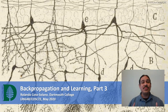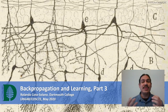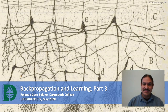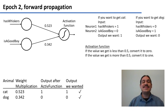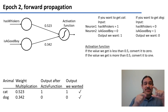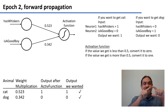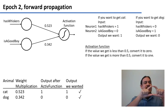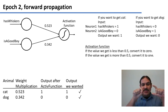Welcome back. Let's continue our brief example of backpropagation and how a neural network can learn. In the last video, we had the same perceptron we've been using — it has two neurons in the input layer for the features: has whiskers and is a good boy. Cat has the value one-zero for these features, dog has the value zero-one. You take the features and multiply them by the weight of the connection between the input layer and the output layer.